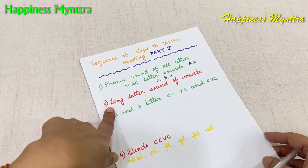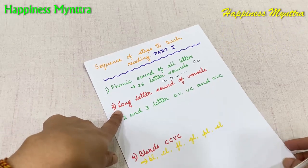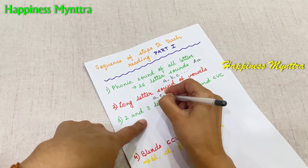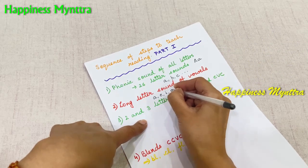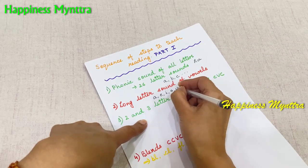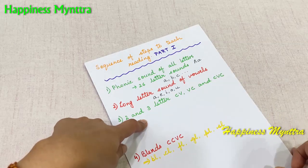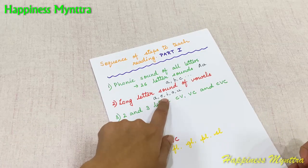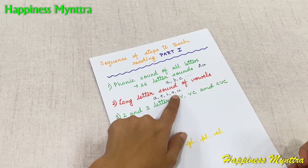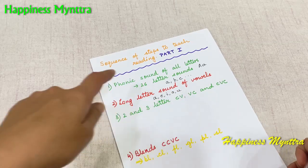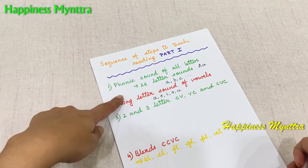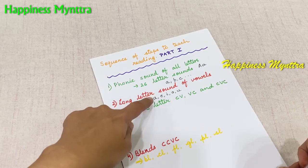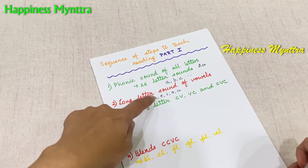Next we go on to the long vowel sounds, which means children need to know A, E, I, O, U — both the short sounds and the long sounds of these letters. So besides knowing the short sounds A, E, I, O, U, children should also be aware of the long sounds of these letters.